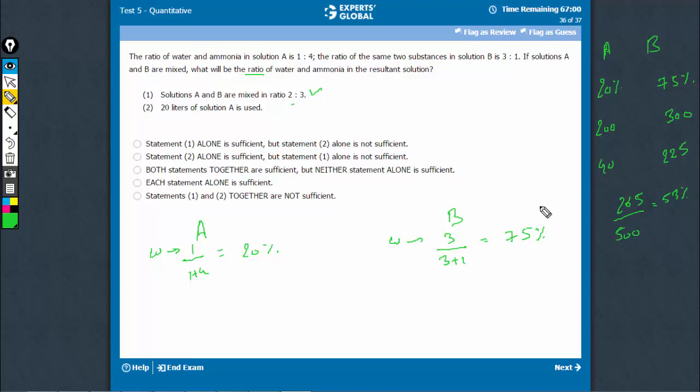Statement 2 says A was 20 liters but doesn't say anything about B. Therefore, statement 2 alone is not sufficient. The answer is option A.